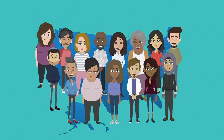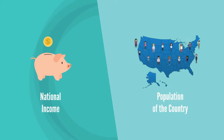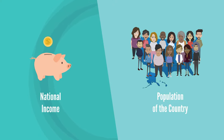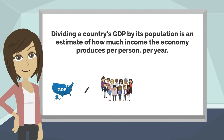Because a nation is made up of people, national income can be divided by the population of the country to indicate the average economic well-being of the people within a country. Dividing a particular country's GDP by its population is an estimate of how much income on average the economy produces per person.